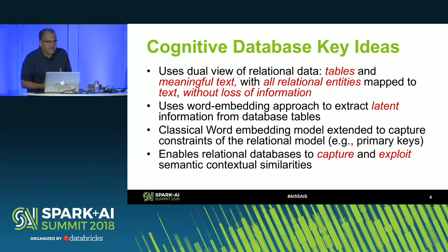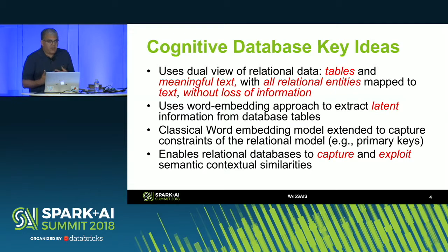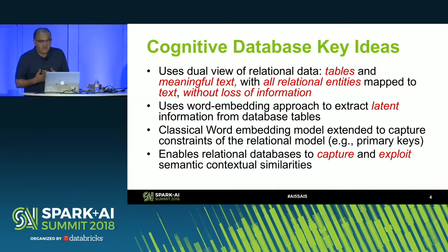Once we have the text view of the relational table, the word embedding approach is used to extract latent information hidden in the database tokens. This information is then used to capture and exploit semantic contextual similarities. To achieve that, we have extended the traditional word embedding model — which supports only sentences in natural languages like English — to support the constraints of the relational model.